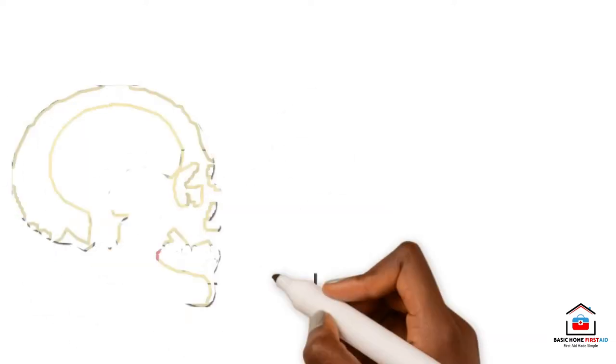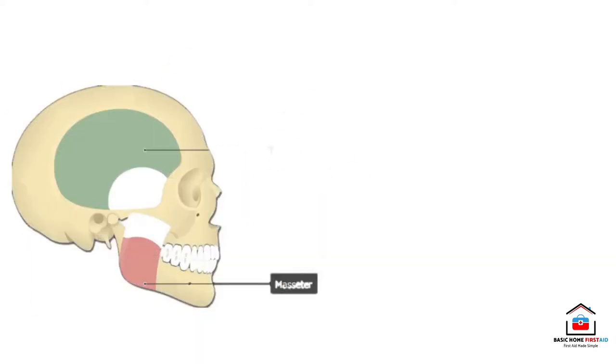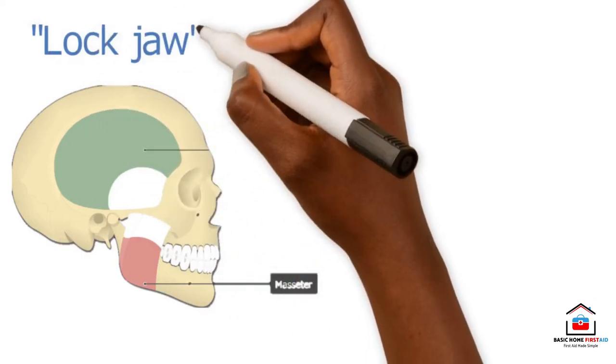One of the most common signs of tetanus is muscular stiffness in the jaw, which is why tetanus is sometimes known as lockjaw. It takes three to five weeks before the signals occur.